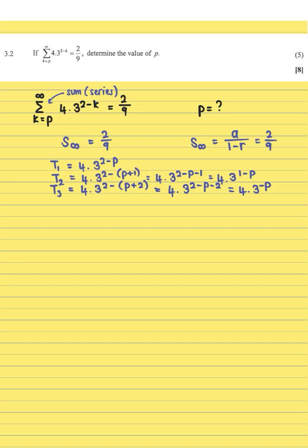If we list these terms next to each other, this is important because we need to identify our a value and r value to put into the formula, which will allow us to calculate p. The first term is 4·3^(2-p), the second term is 4·3^(1-p), and the third term is 4·3^(-p). The first 3 is all we need.